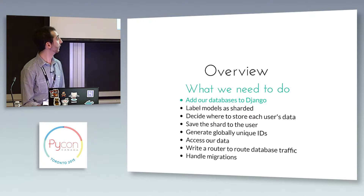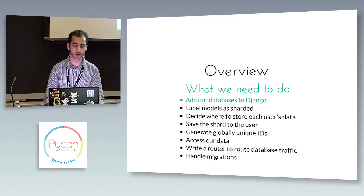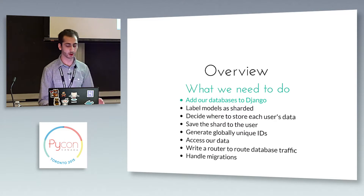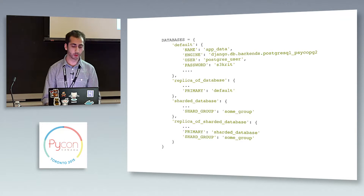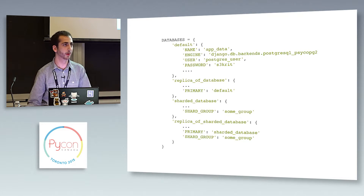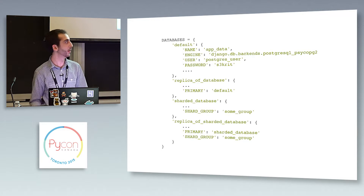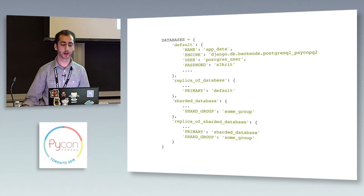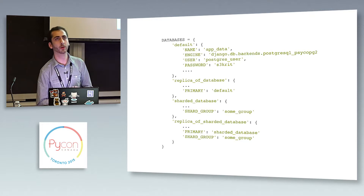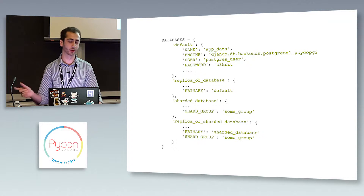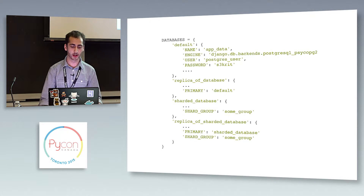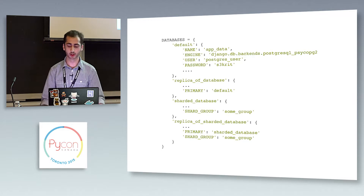The first thing you would do if you wanted to shard a model is add your databases to the database config in Django. We added two new keys to the databases config: the shard group — so if you're sharding all your invoices on databases one through three, all of those will be in the invoices shard group — and we also defined a primary key that allows you to specify if you have a replica database and which it is of.